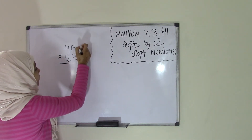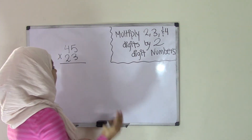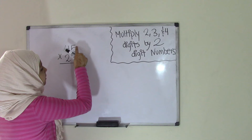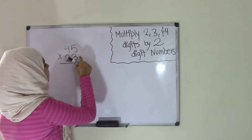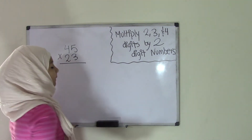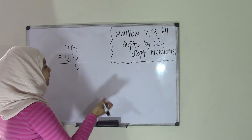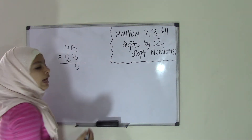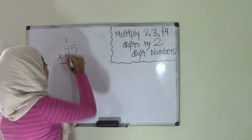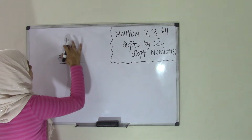So now I have 45 times 23. Always remember that whenever you're multiplying, you always need to go from right to left. So I'm going to start with 3 times the top number, which is 5. So 3 times 5 — I know that 5 times 3 is 15. I'm going to put the 5 down in the 1's place, and the 1 for the 15 is going to go on top of the 4 in the 10's place. So 5 times 3 is 15, 5 goes down, and I carry the 1 up on top of the 4.